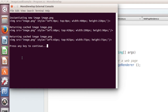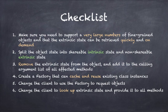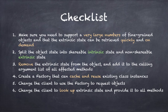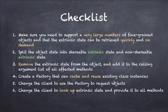Here is a quick checklist you can use to implement the flyweight pattern. First, make sure you need to support a very large number of fine-grained objects efficiently, and that the extrinsic state information of each object can be retrieved quickly and on demand. Then split the object state into shareable intrinsic state and non-shareable extrinsic state. Remove the extrinsic state from the object and add it to the calling argument list of all affected methods. Create a factory that can cache and reuse existing class instances. Change the client to use the factory to request objects. Finally, change the client to look up all extrinsic states and provide that information to all affected methods.